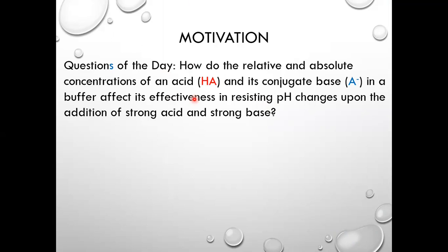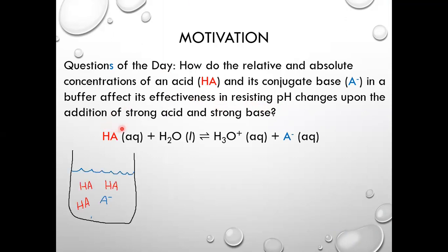An effective buffer resists drastic pH changes upon the addition of a strong acid or a strong base. When we have a buffer, we have a solution containing relatively high concentrations of a weak acid, called HA, and that weak acid's conjugate base, A-. Specifically in today's experiment, our weak acid will be acetic acid and the conjugate base of acetic acid is the acetate ion.